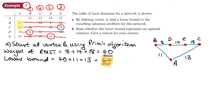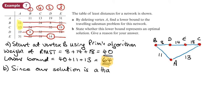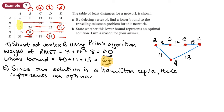Part B asks us to state whether this lower bound represents an optimal solution. It does, because it's a Hamiltonian cycle — it visits every vertex and we get back to where we start. Since our solution is a Hamiltonian cycle, it must be an optimal solution. We need to make sure that we mention the phrase Hamiltonian cycle.